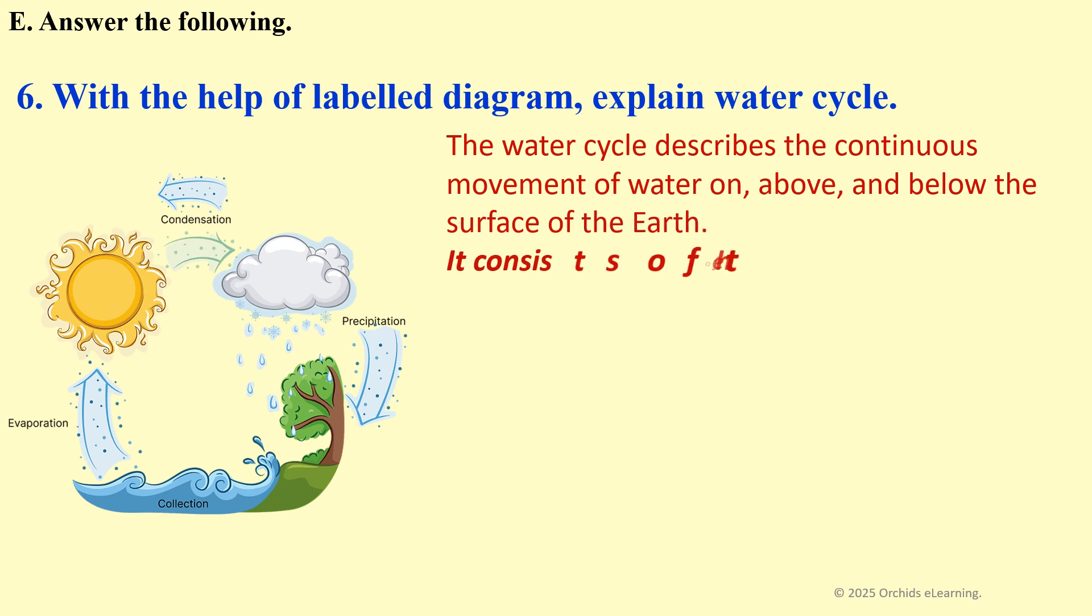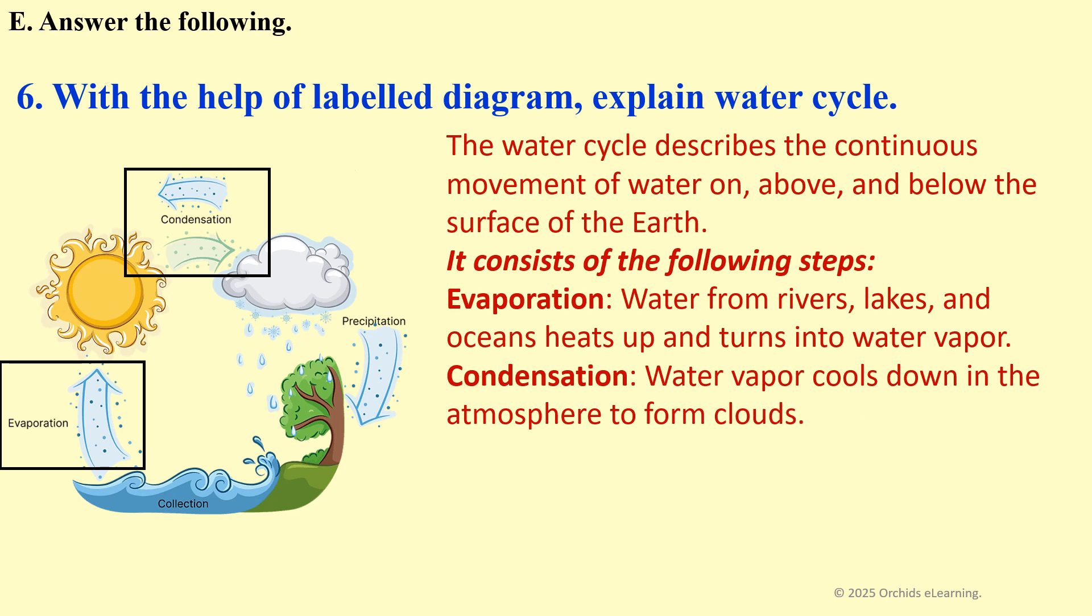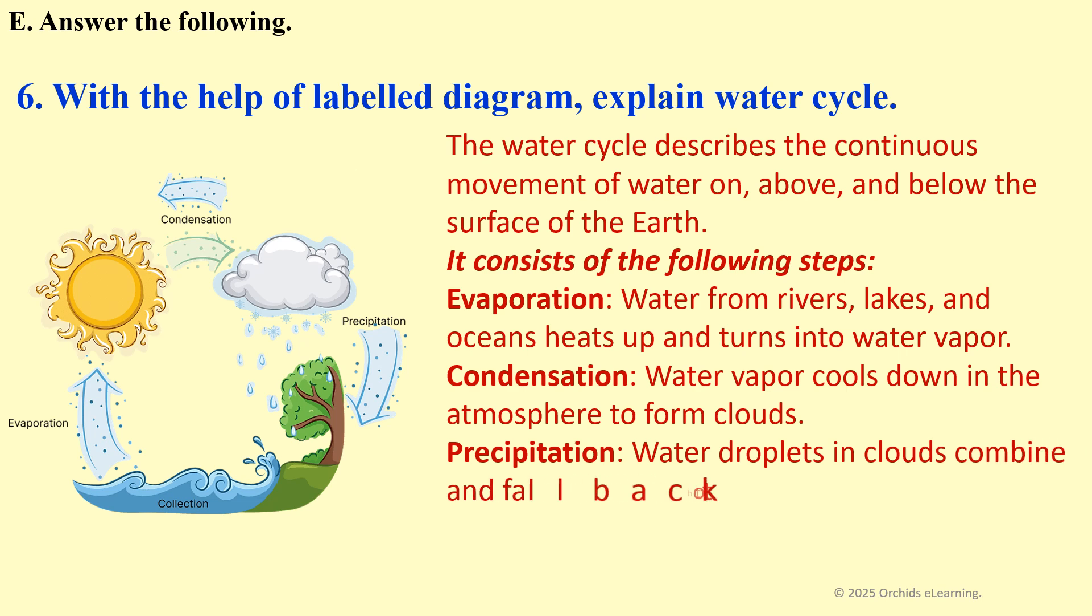Evaporation: Water from rivers, lakes, and oceans heats up and turns into water vapor. Condensation: Water vapor cools down in the atmosphere to form clouds. Precipitation: Water droplets in clouds combine and fall back to the earth as rain, snow, or hail.